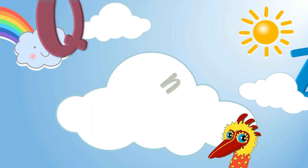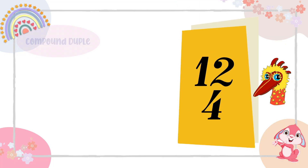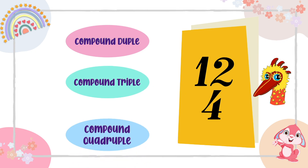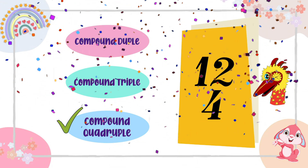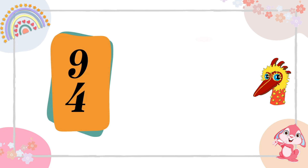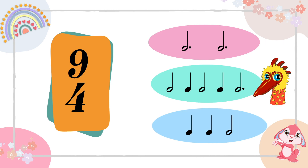Quiz time! Is 12/4 compound duple, compound triple, or compound quadruple? That's easy — compound quadruple! Which of the following is in 9/4 compound time? Option 1, option 2, or option 3? 9/4 is compound triple, so the answer is option 2.